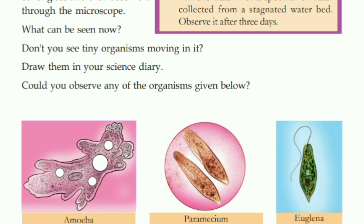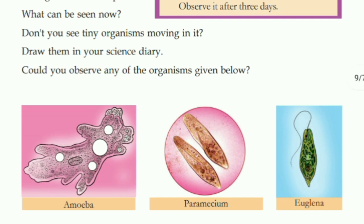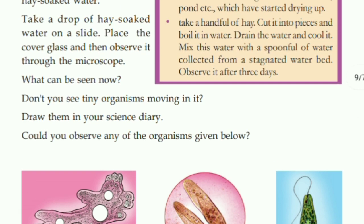The diagram is very important from an exam point of view. What are microorganisms? Give examples of microorganisms and draw their diagram — this could be a three or four mark question. For one mark, write the definition; for the other marks, name amoeba, paramecium, and euglena and draw their diagrams.